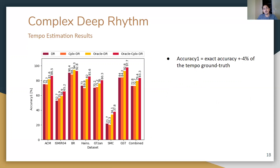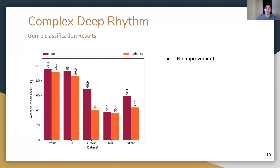In terms of accuracy-one — exact accuracy within a 4% window centred on the tempo ground truth — the oracle complex Deep Prism performs better for all datasets except ballroom. However, looking at genre classification results, there is no improvement compared to the original method. This can be explained by the fact that adding phase information in the learning process does not allow the model to optimally generalize.